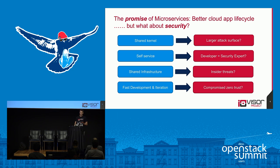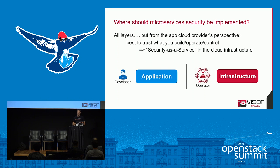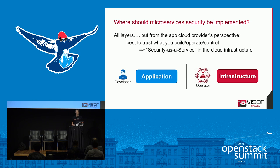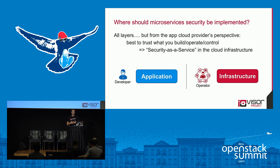As we go through this fast development cycle, are we compromising some of the assumptions we made when working in VMs or in the cloud — where we could assume nothing about the VM and isolate it easily? Now, who do we trust? If we want to secure these microservices, where should we put that security? The answer is you have to defend at all layers. Everyone should be thinking about security, including the developer. But as OpenStack infrastructure operators, we have a responsibility to think about our piece.